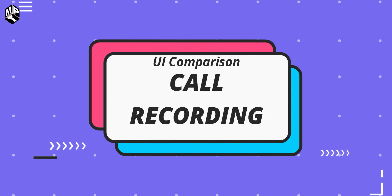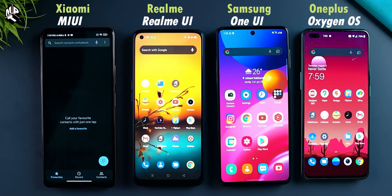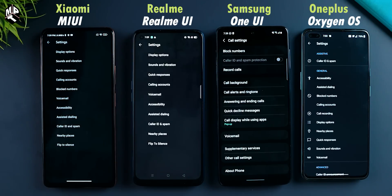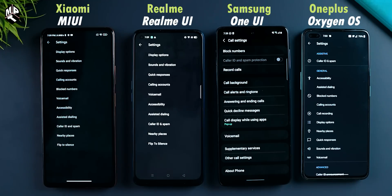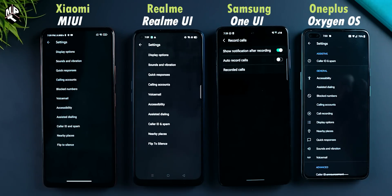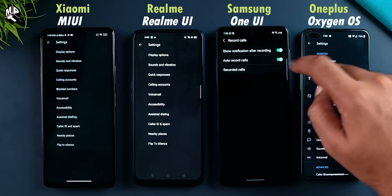The third feature is the Call Recording feature. You will find a call recording feature on any phone. The Google Dialer is coming and will also be known. We cannot record calls automatically — there is one option for Automatic Call Recording. This 4 UI is less than Samsung's One UI, which has the Auto Call Recording feature. The other UI uses Google Dialer.